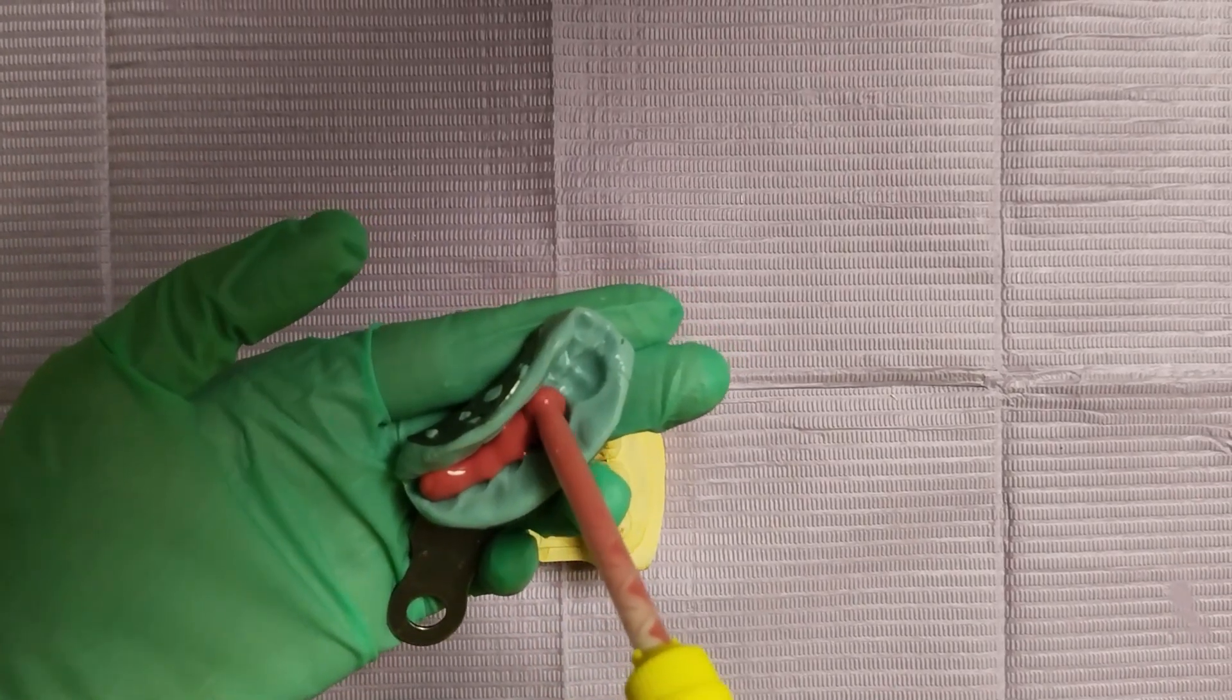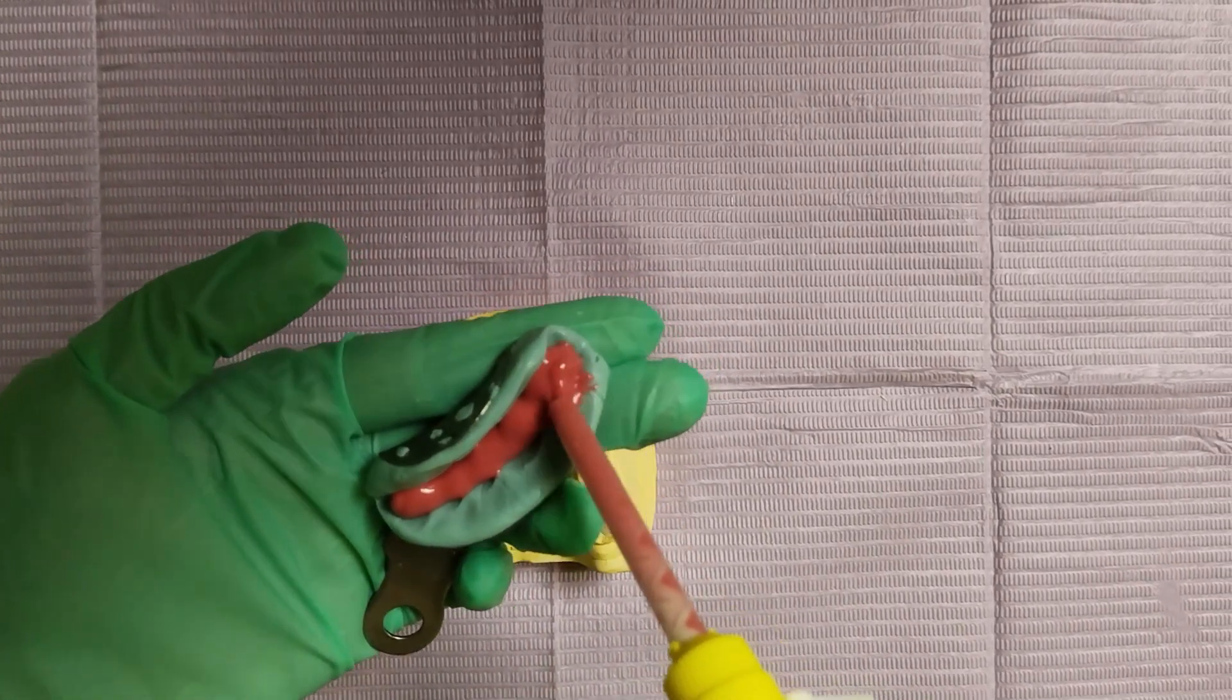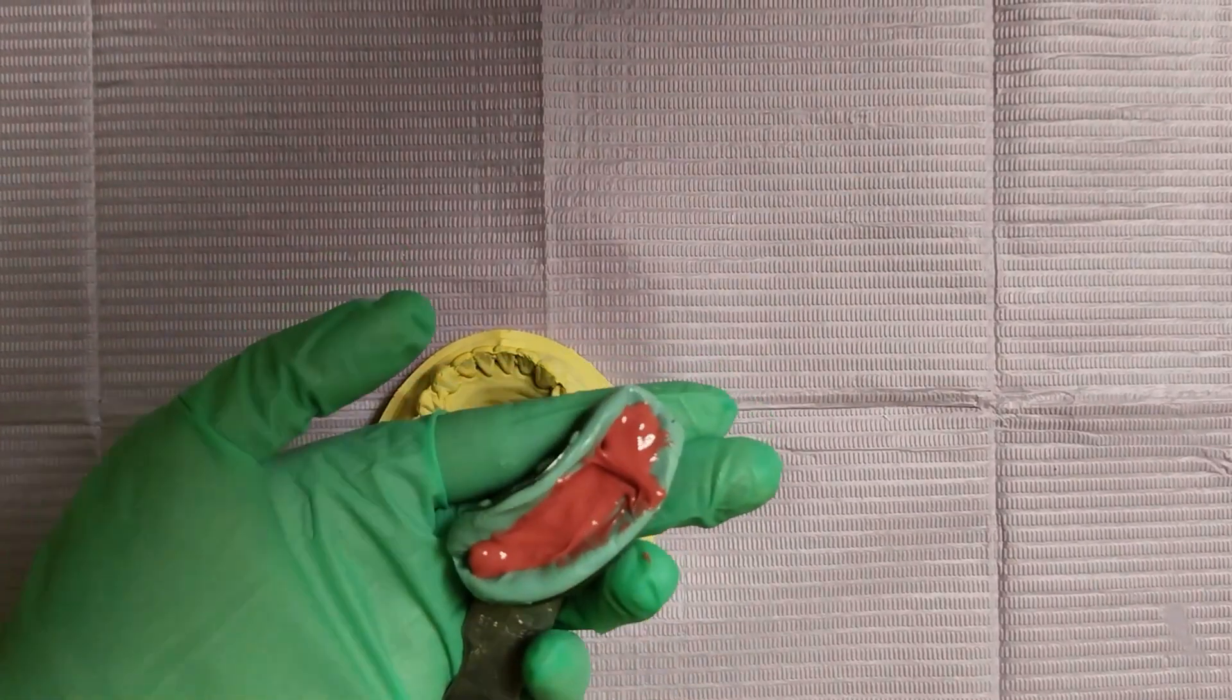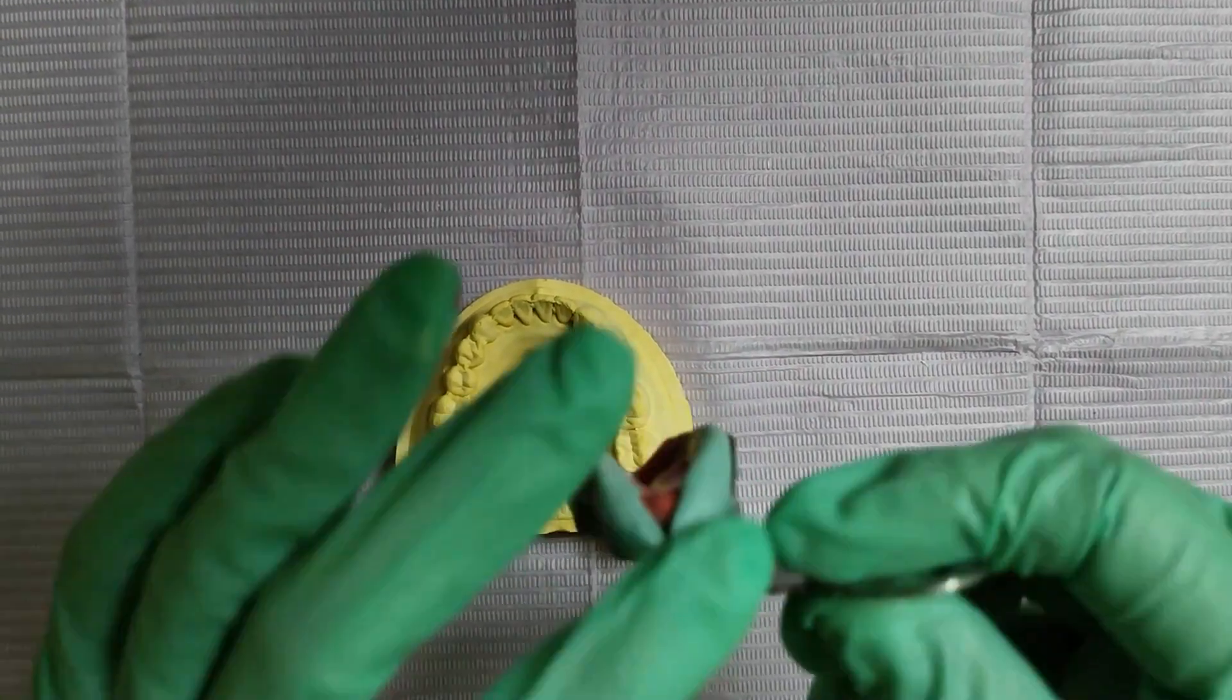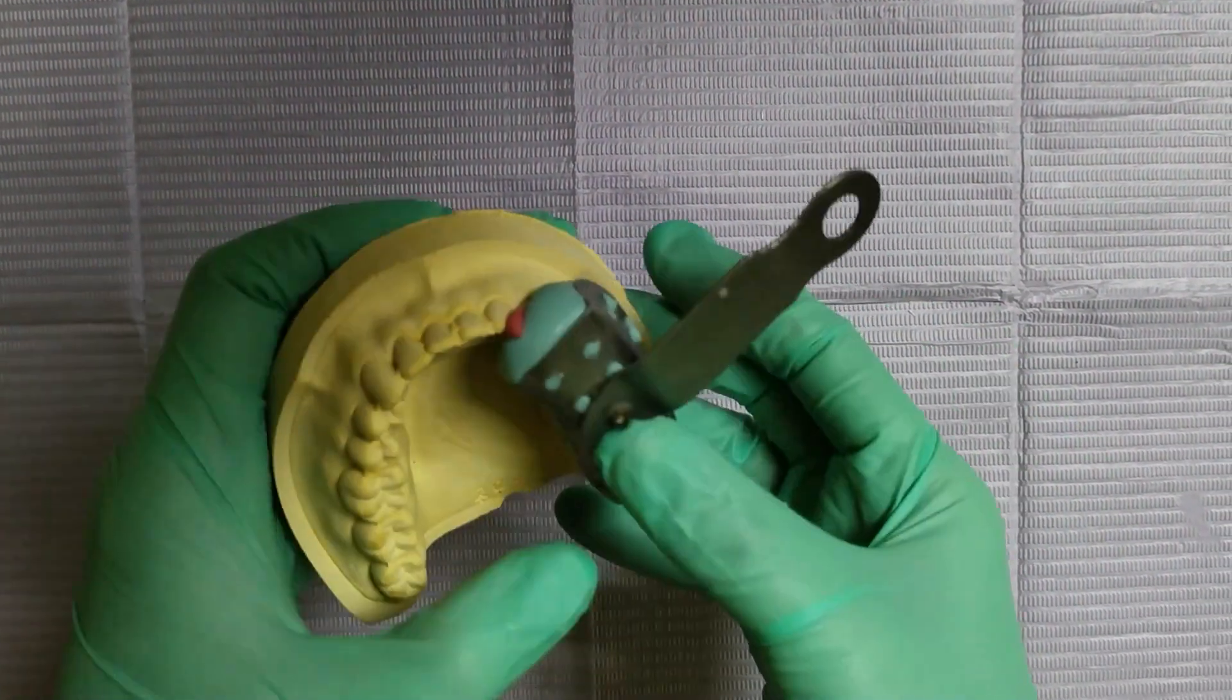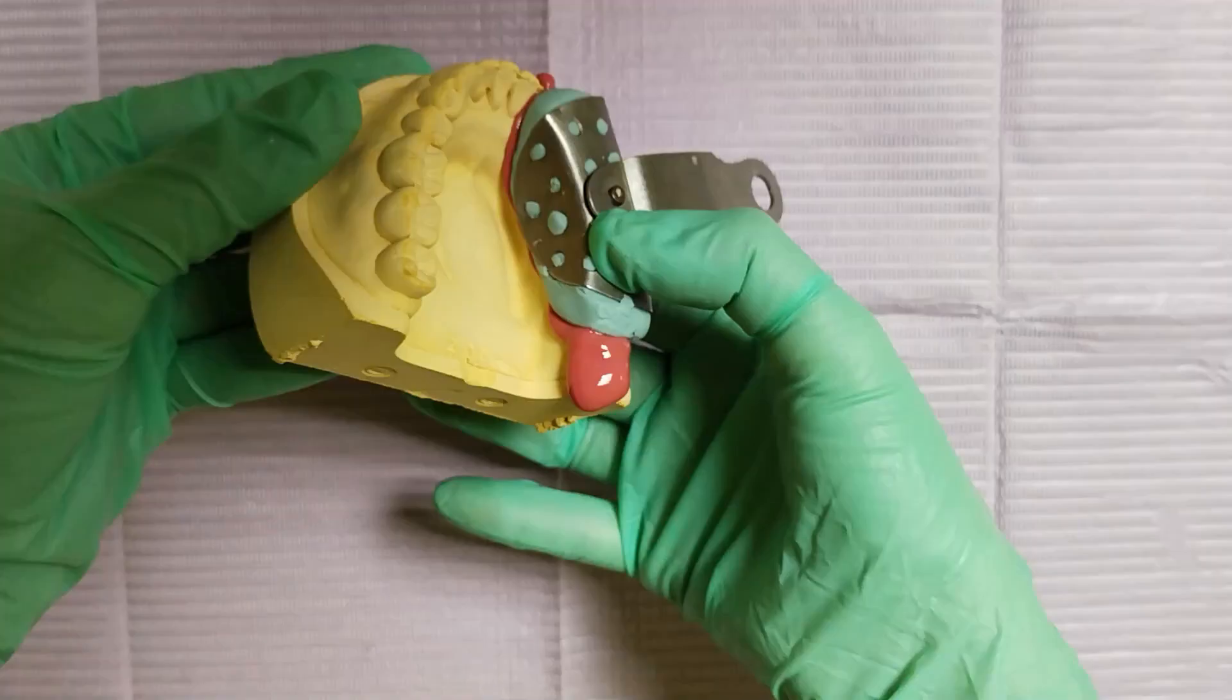Dispense the light body on the tray at the area of your teeth in a slow vibrating motion. You will need a small amount of material to do this. Place the tray back to the model and let it set.